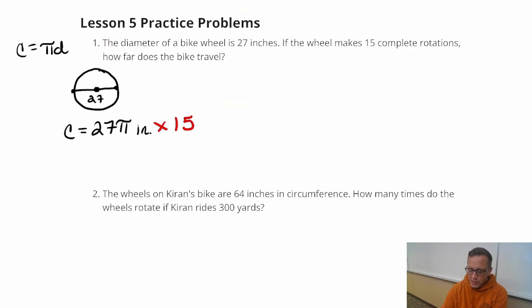So that means that it's 27 pi times 15. So you're going to multiply that by 15, and you should get 405. I'm trying to do that in my head. 27 times 15, 405, I guessed right. So 405 pi inches.